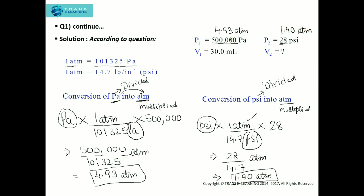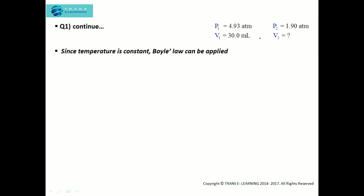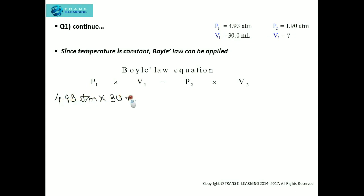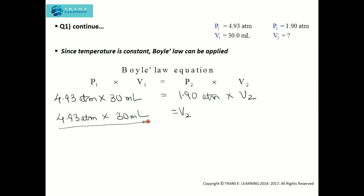Now Pressure 1 and Pressure 2 are both in atmosphere, so we can substitute into Boyle's law. Since temperature is constant, Boyle's law applies. Pressure 1 is 4.93 atm, Volume 1 is 30 milliliters, and Pressure 2 is 1.90 atm. Volume 2 equals (4.93 × 30) divided by 1.90; the atmosphere units cancel, giving the answer in milliliters.